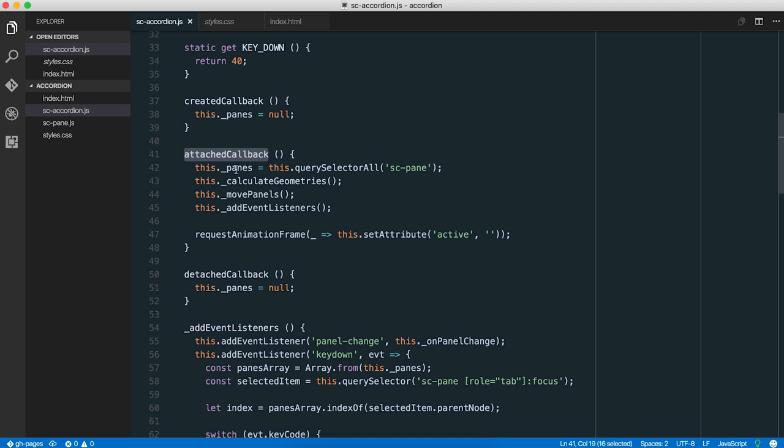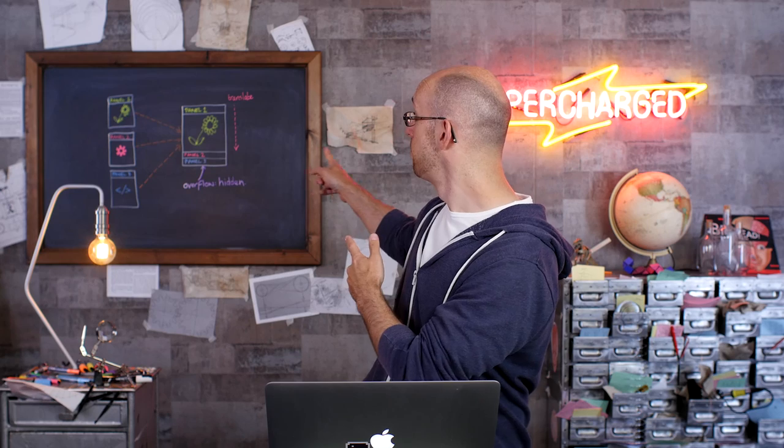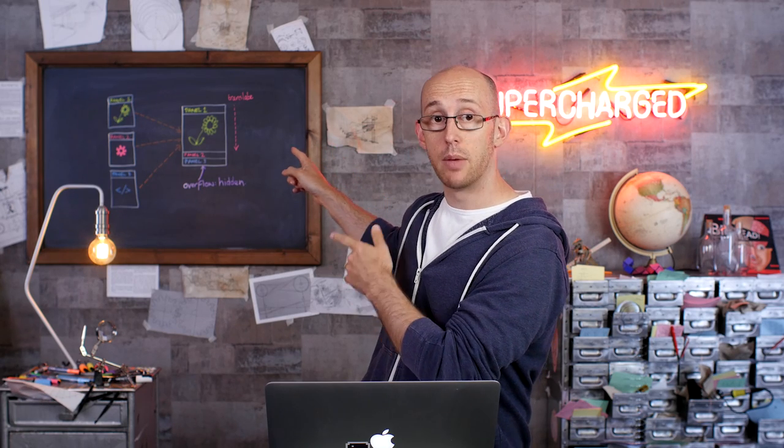So let's look at the accordion again. So when it gets attached, what we do is we ask for all the panes, and then we calculate the geometries. And the geometries is, basically, how tall is the header? And then we figure out the available height based on the total height of the accordion minus the number of headers we've got. And that's the amount of content space that we've got.